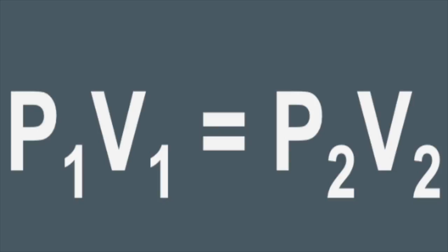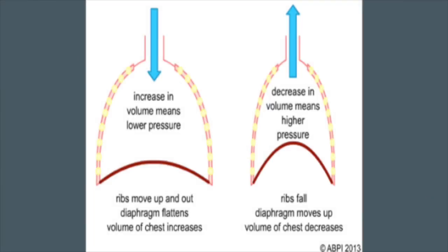Boyle's Law states that P1V1 equals P2V2. When the diaphragm moves downward, its volume decreases and its pressure increases. The diaphragm's contraction allows for the chest cavity to expand, so the lungs' volume increases. By Boyle's Law, the lungs' pressure will decrease, causing oxygen to move into the lungs, because the oxygen gas will move from a higher area of pressure — the air around us — to an area of lower pressure, the lungs. When the diaphragm relaxes, the opposite happens: carbon dioxide, the waste product, moves out from higher pressure to lower pressure in the atmosphere around us.